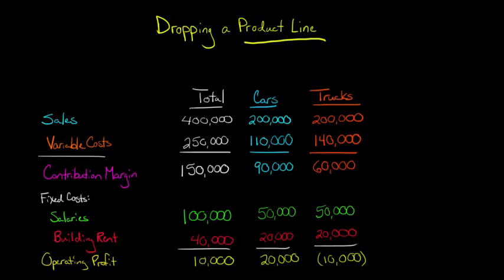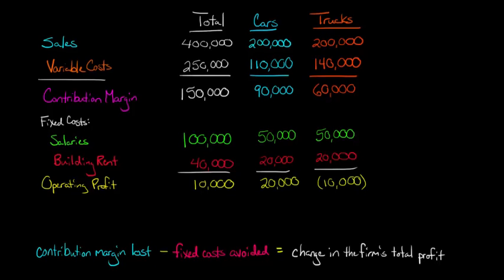We look and see the overall firm profit is $10,000, but we've got negative $10,000, a loss from this truck division. So we're trying to figure out should we drop that truck division. Here's a good rule of thumb. If you use this formula right here, that will tell you whether or not you should drop this division.